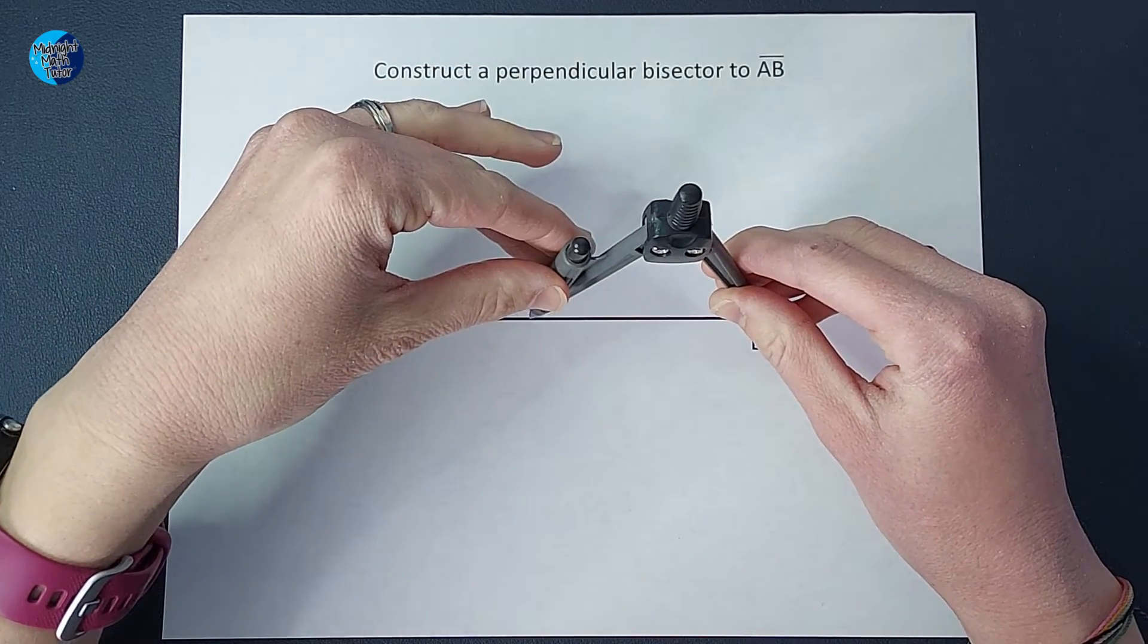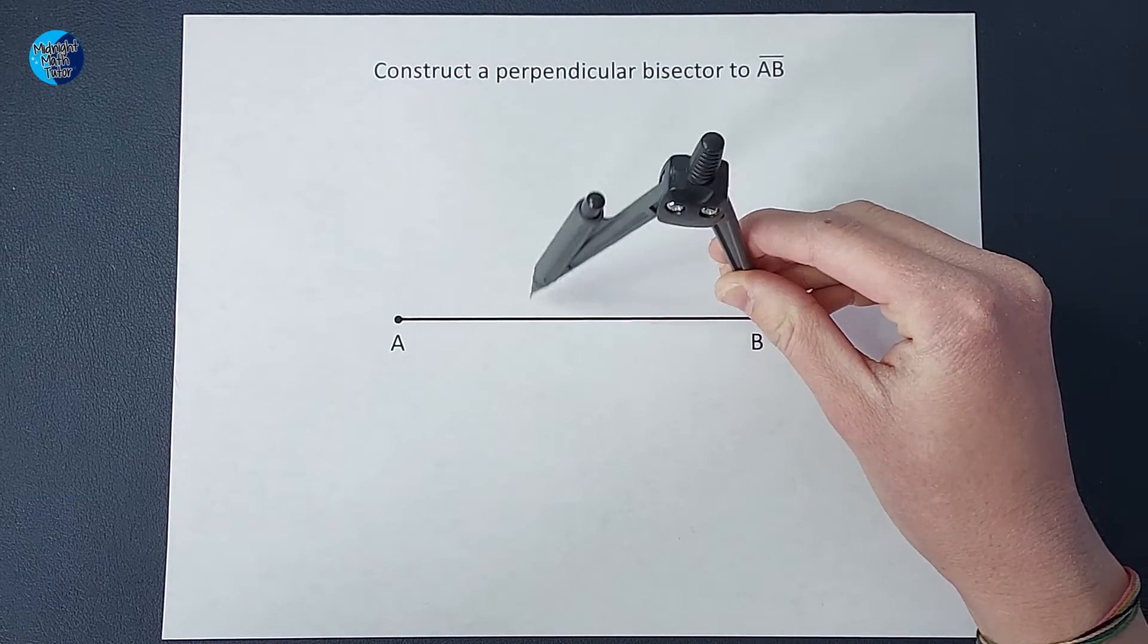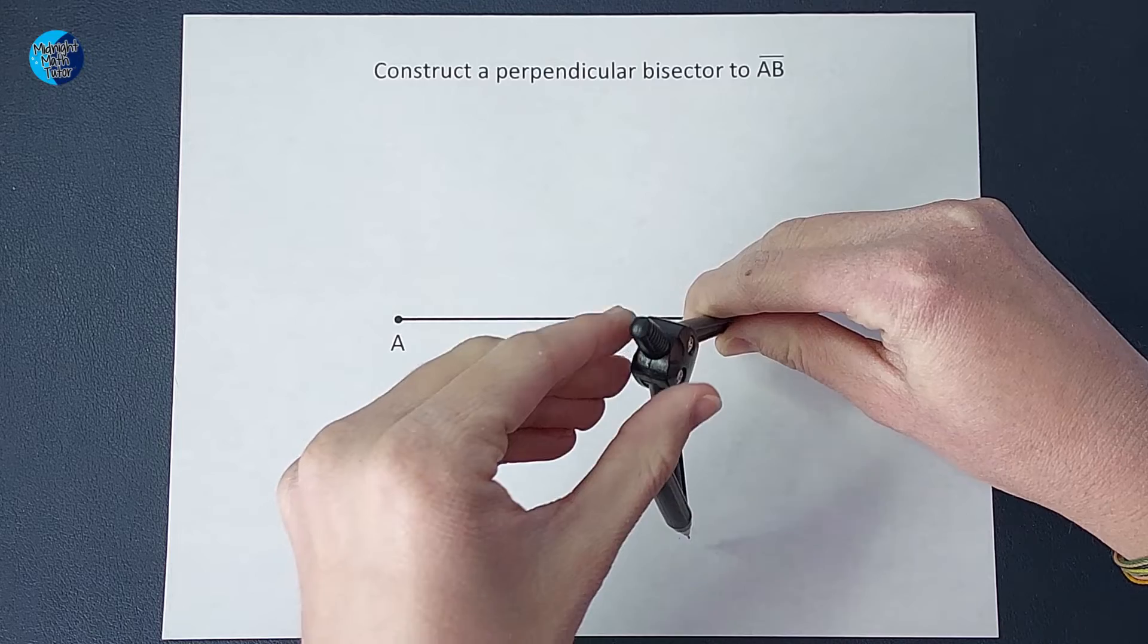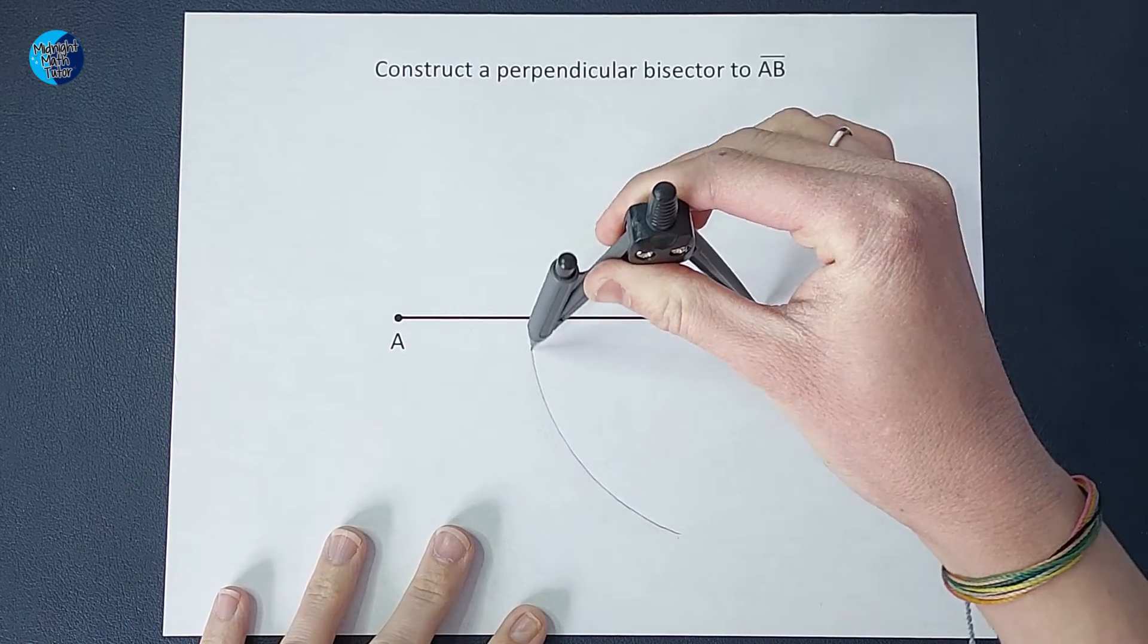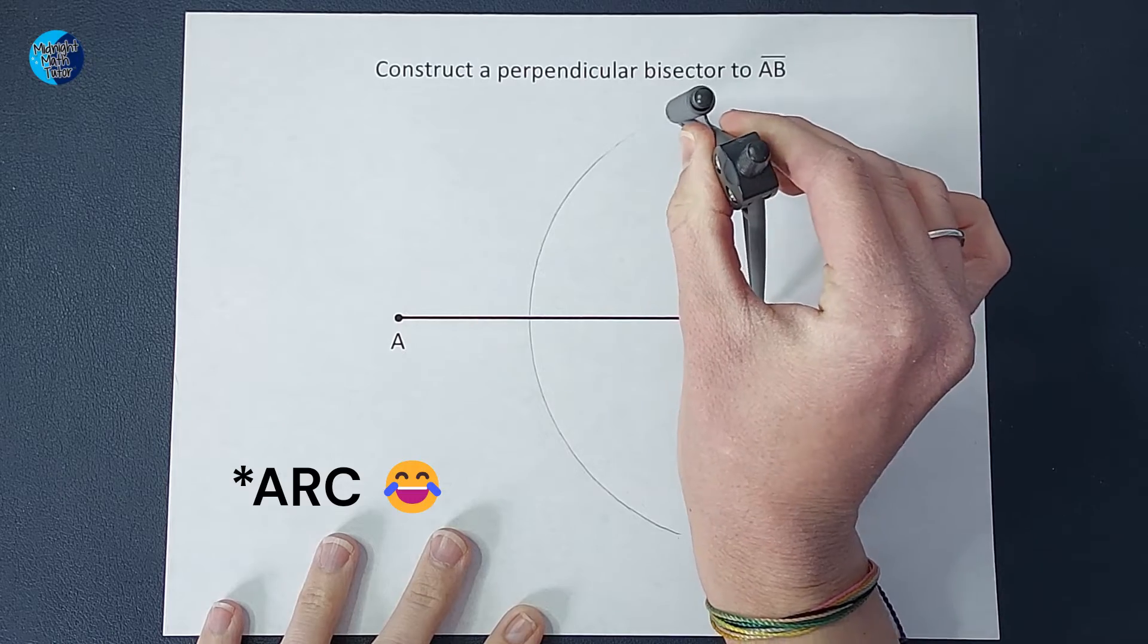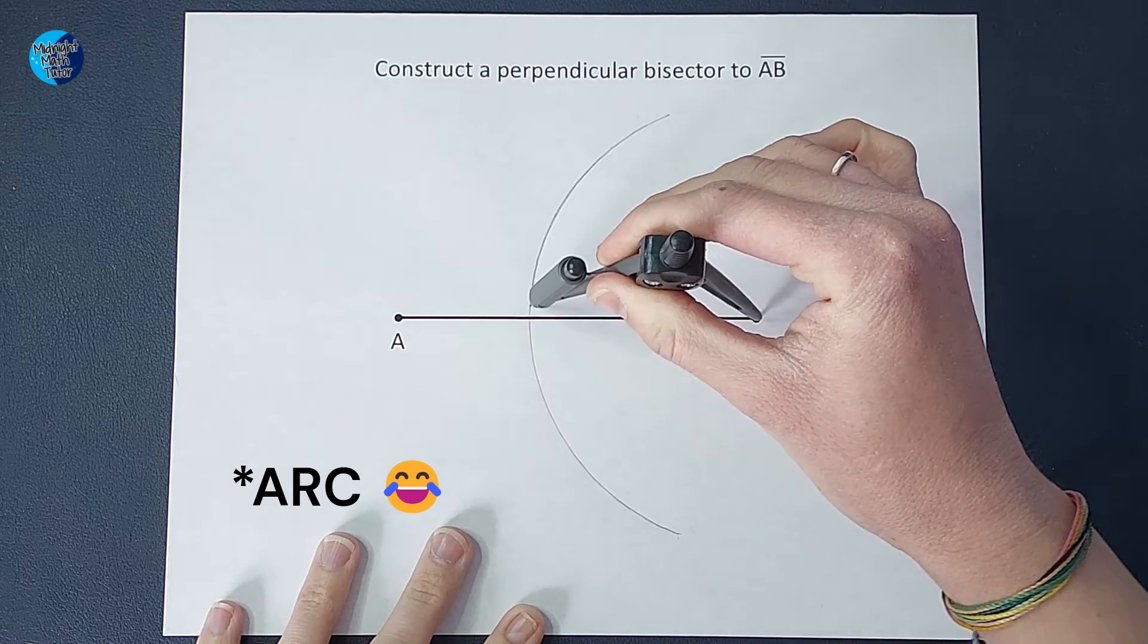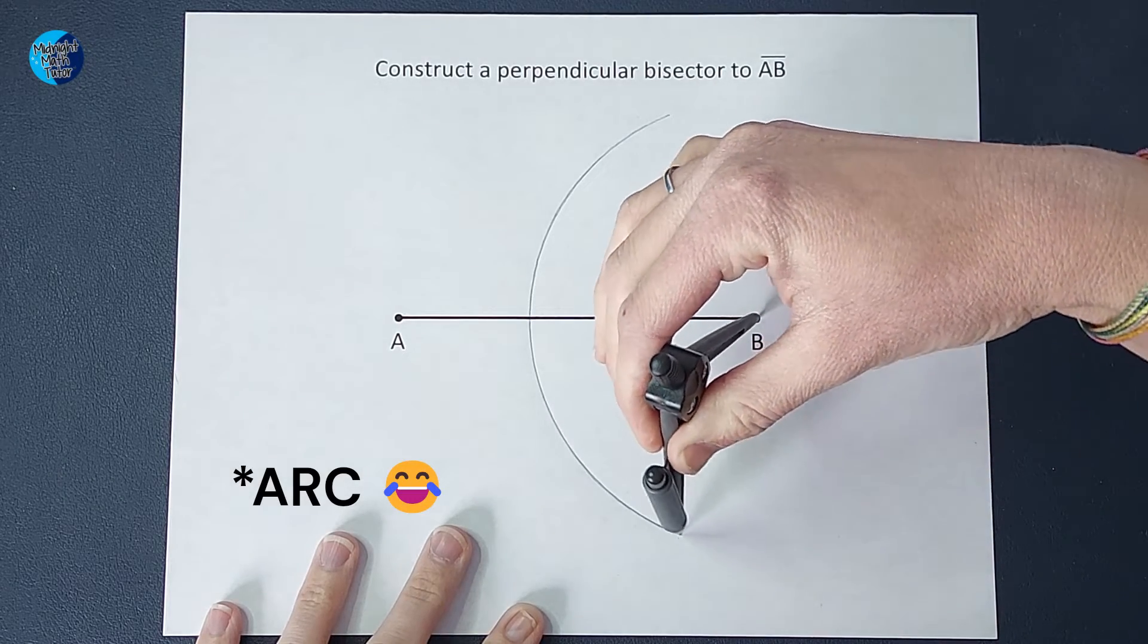But just eyeball it and be like, okay, that's bigger than half, right? And then we're going to make our big swoop. I don't know if this has an official math term. If it does, enter it here. We're making a big swoop.